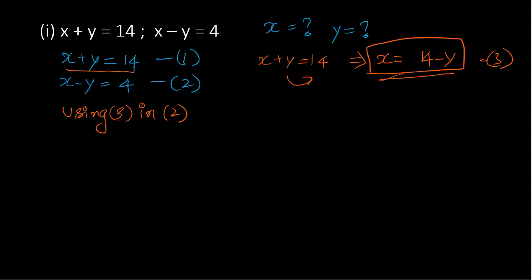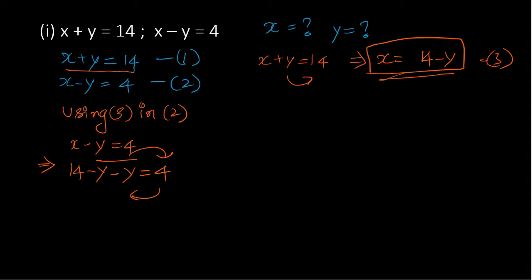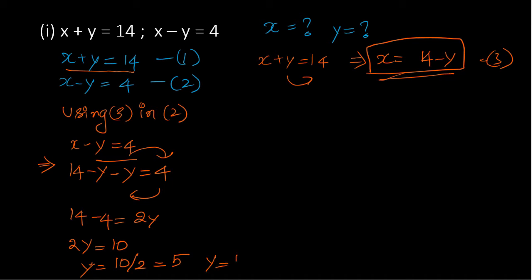Now substitute equation 3 into equation 2: x minus y equals 4 becomes 14 minus y minus y equals 4. So 2y equals 10, which means y equals 10 divided by 2, so y equals 5.